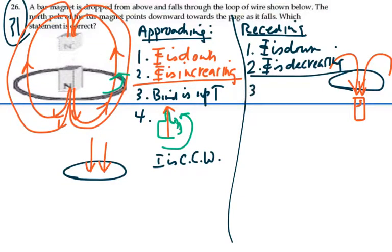What is nature going to do about that? Well, since the flux is down and decreasing, nature is going to set up its own magnetic field, induced, that is down.